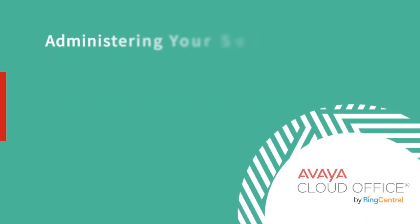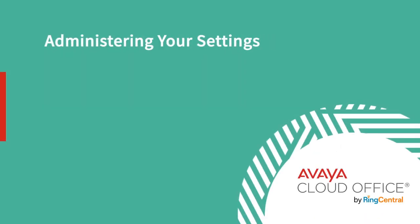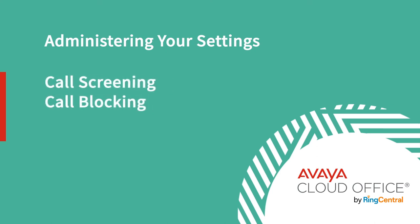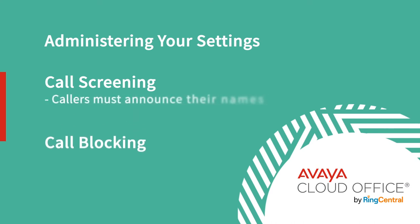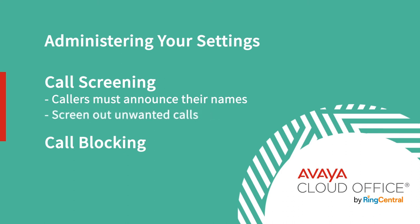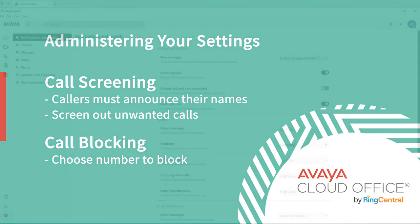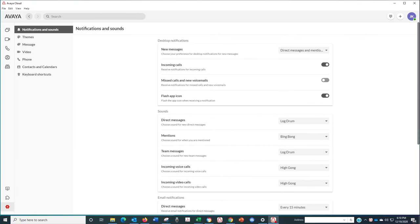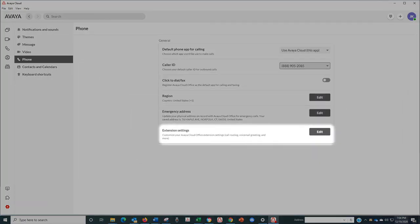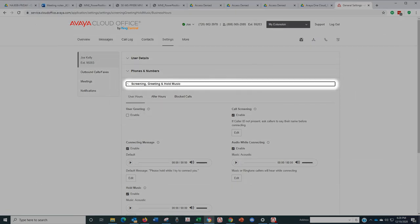Administering your account is pretty easy. For example, let's quickly look at how to adjust the settings for two great features: call screening and blocking. When you use call screening, it requires callers to first announce their names before the call gets connected to you — it's a great way to screen out unwanted calls. Call blocking is even tougher: it lets you choose specific phone numbers and fax numbers to block. To set up these features, click on the gear icon, then the phone icon, then extension settings. That will take you into your cloud account. There, select screening, greeting and hold music. Now you'll see your options for enabling call screening and call blocking.